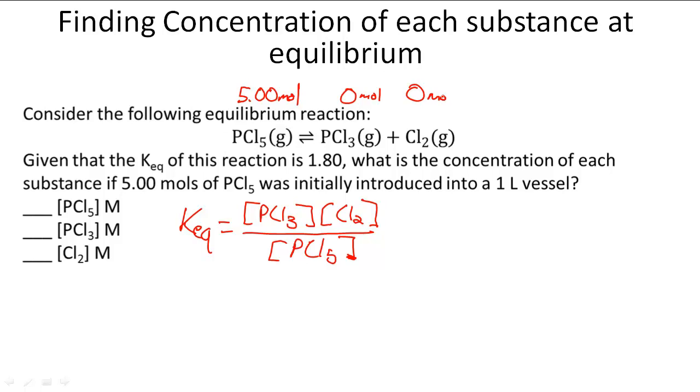We know there's going to be a change in the concentration. We're going to use the variable x to represent the change in concentration. We're going to have 5.00 minus x for PCl5, because that's how much the concentration is going to change by x.